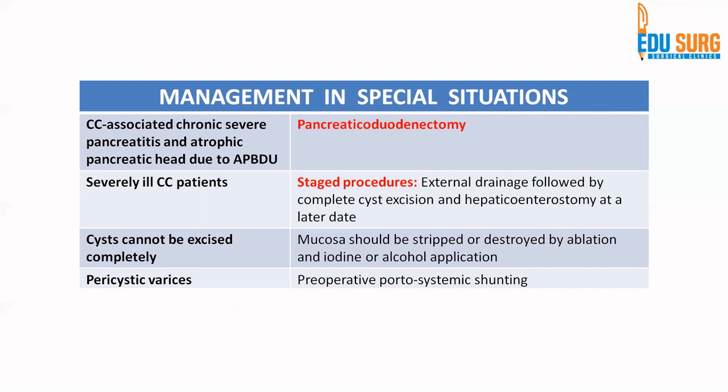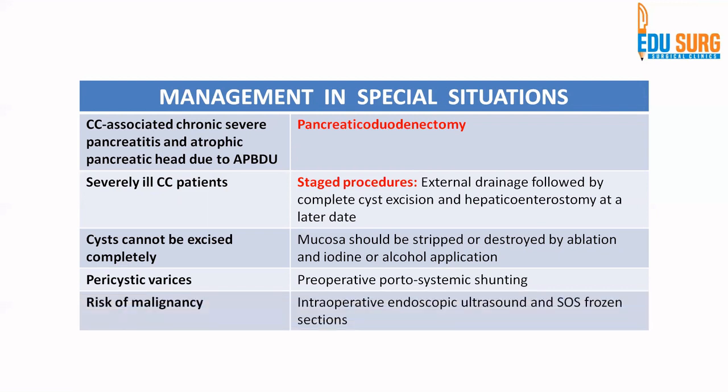If the patient already has portal hypertension, a portosystemic shunt may be needed preoperatively before choledocal cyst surgery. If there is high suspicion of malignancy, intraoperative endoscopic ultrasound and frozen sections may be needed to determine if malignancy is present. These are special situations which may need modification in the conventional management of choledocal cyst.